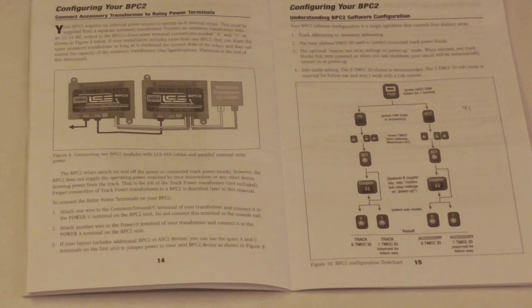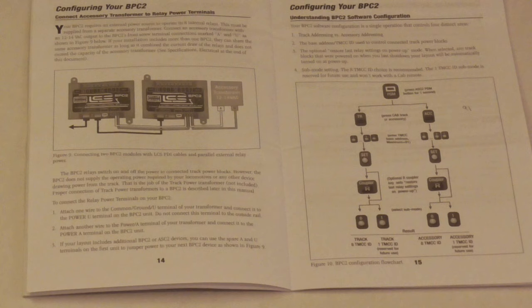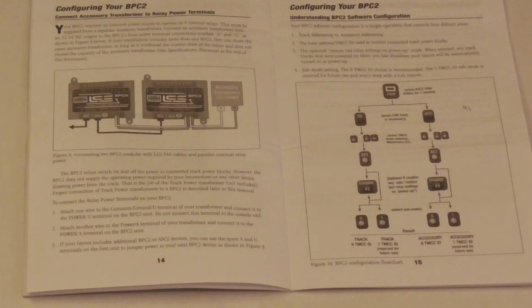Page 15 shows you how to program the block power controller. The final decision you make is whether you want the settings of the block power controller at the end of your session — when you turn the layout off — to also be on when you turn the layout on again at a later time. For instance, if you have a track siding block powered on when you shut off, you can program the BPC to have that block on the next time you power up. The default is that everything that was on when you turned off will be off when you power back on.